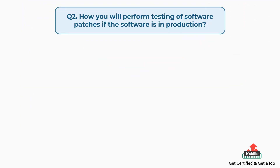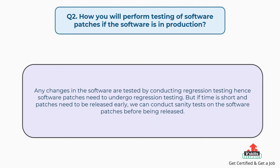Question number 2: How will you perform testing of software patches if the software is in production? Any changes in the software are tested by conducting regression testing, hence software patches need to undergo regression testing. But if time is short and patches need to be released early, we can conduct sanity tests on the software patches before being released.